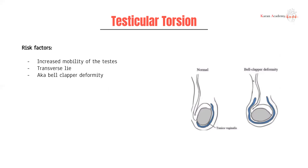One of the most important risk factors for testicular torsion is a bell-clapper deformity. Ideally, the testicle should have a longitudinal lie and should be surrounded by the tunica vaginalis, attached posterolaterally through the gubernaculum. However, if the testicle has a transverse lie, it often leads to issues with attachment as well as increased mobility to rotate, putting you at a much higher risk of testicular torsion.